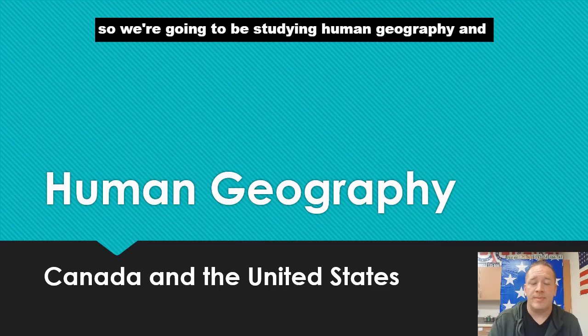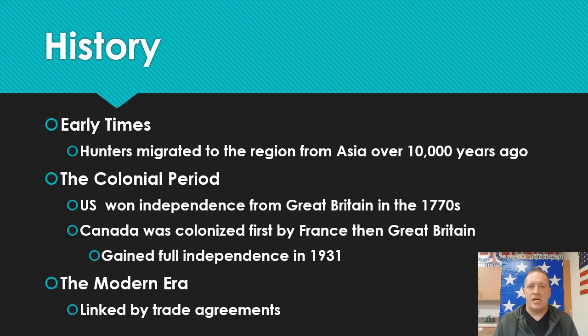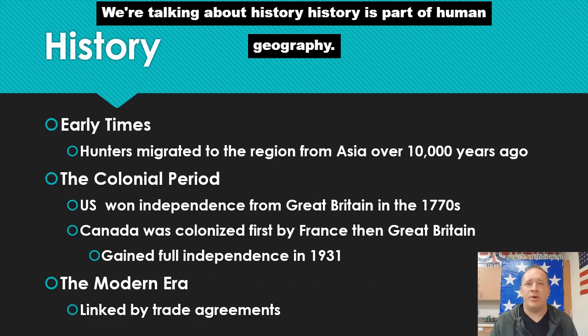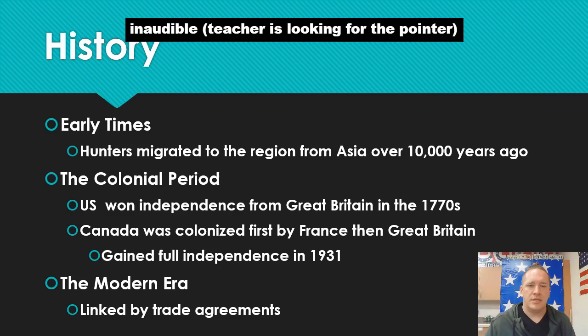So we're going to be studying human geography and physical geography — an overview of the region. Here's Canada and the United States. Let's talk about human geography first. So let's go to our first slide. We're talking about history. History is part of human geography. So when we look at the early times for Canada and the United States...